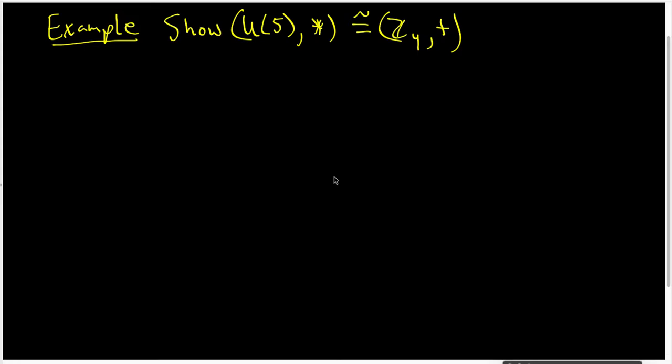In this video, I want to show that the group of units modulo 5 under its multiplication is isomorphic to Z4 under its addition.